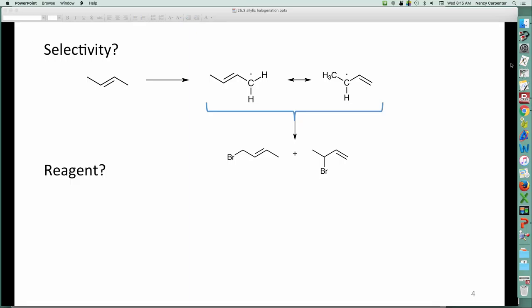So how do we control this? Well, the way we control this, to some extent anyway, is by using a new reagent. Obviously, we can't use just plain old-fashioned bromine, because if we used plain old-fashioned bromine, it would add to the double bond in an electrophilic addition reaction.